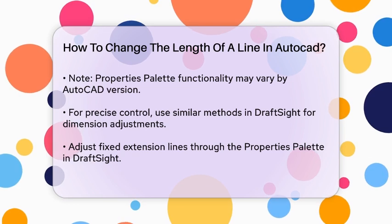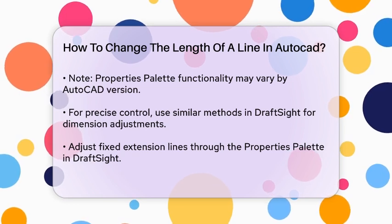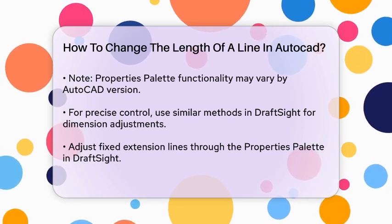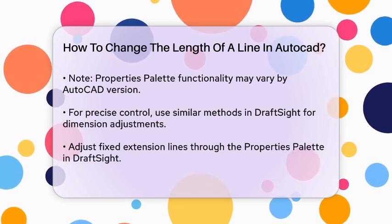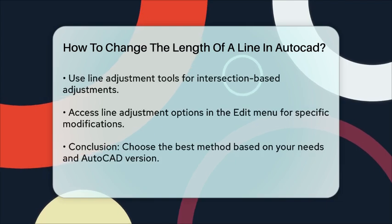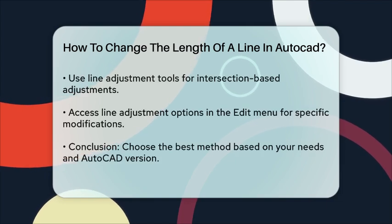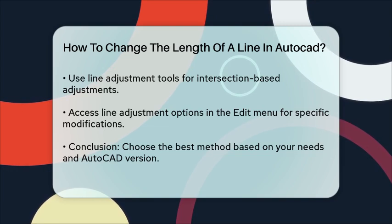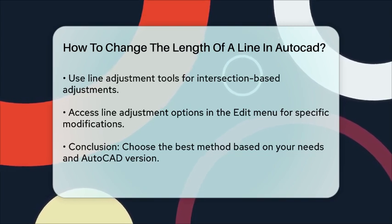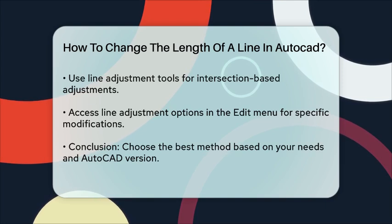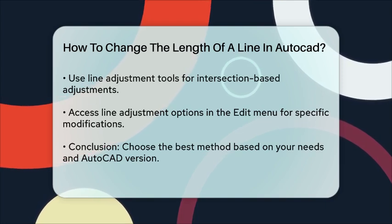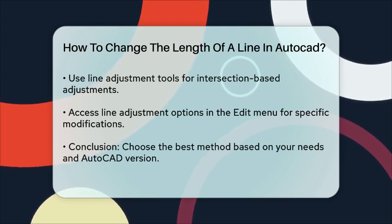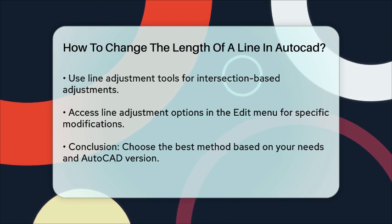In some cases, you might need to adjust the line length based on intersections or specific points. For this, you can use the line adjustment tools available in some CAD software. For instance, you can click on the line adjustment option in the edit menu, select the shape whose line you want to adjust, and then specify the adjustment method. You can adjust the line length based on an intersection with another shape, a specified point, or by entering a specific length.